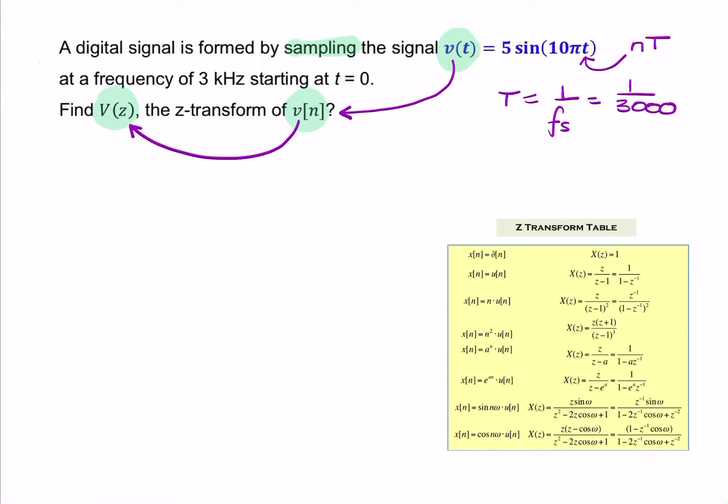So, we can write v(n) as 5 sine 10π, and then, instead of t, I replace it with n times uppercase T, or Ts. So, I multiply it by n times uppercase T, which is 1 over 3,000.